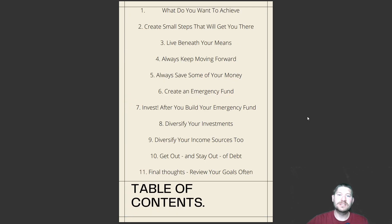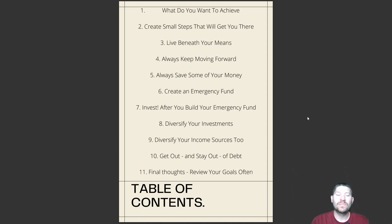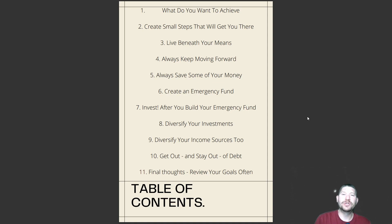Table of Contents — this is what we will learn in today's video: What do you want to achieve and how to create small steps that will get you there; Live Beneath Your Means; Always Keep Moving Forward; Always Save Some of Your Money; Create An Emergency Fund; Invest After You Build Your Emergency Fund; Diversify Your Investments; Diversify Your Income Sources; Get Out and Stay Out of Debt; Final Thoughts — Review Your Goals Often.